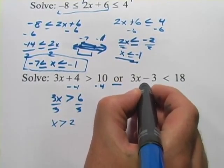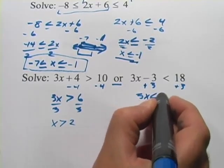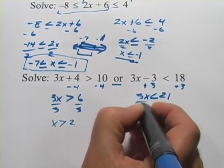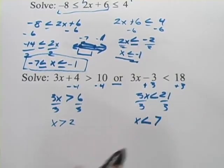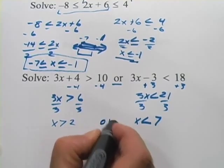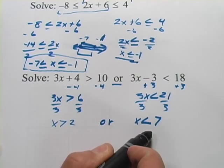This one over here we're going to add 3, we get 3x is less than 21, we divide by 3 and we get x is less than 7. So we've got x is greater than 2 or x is less than 7.